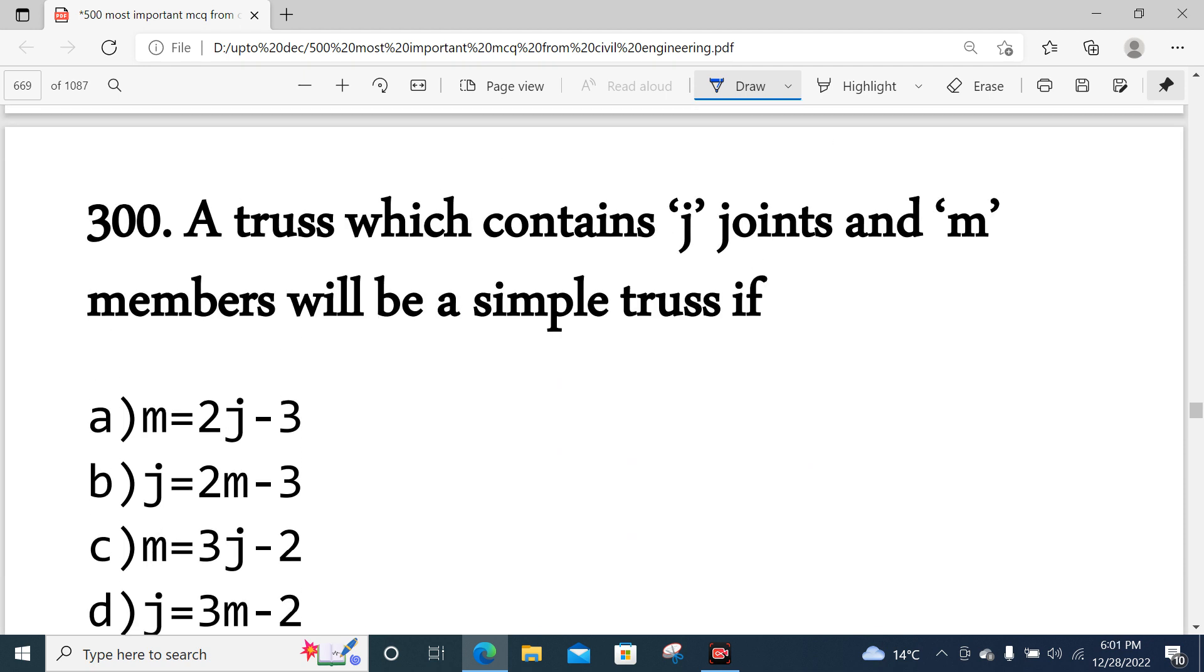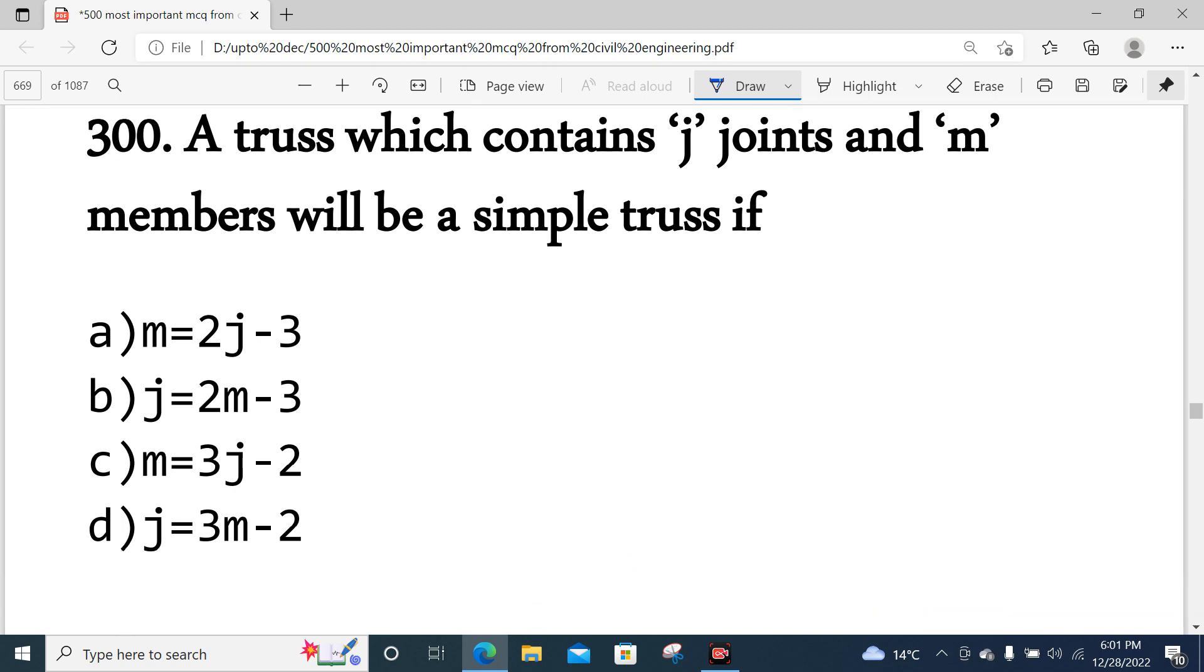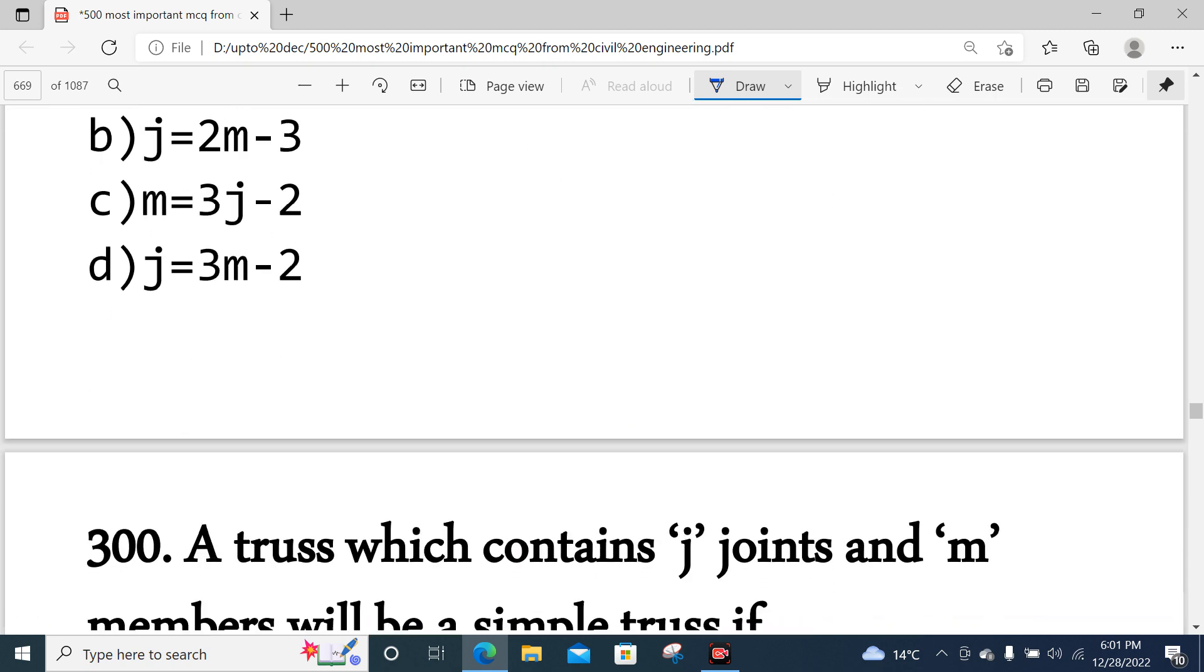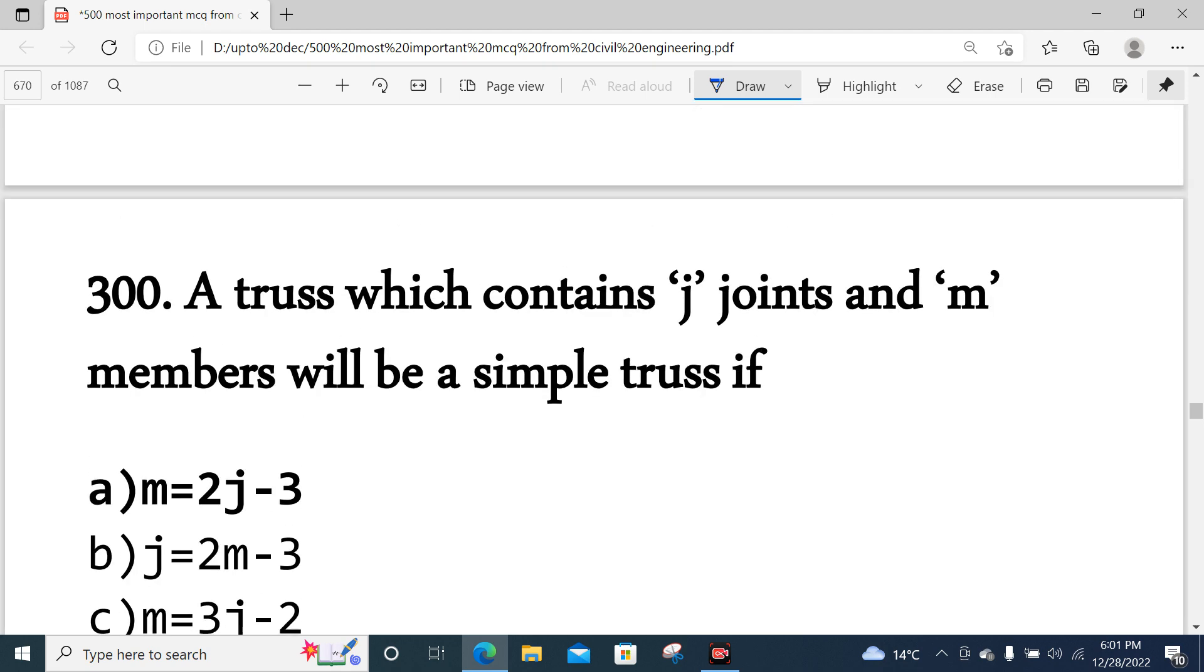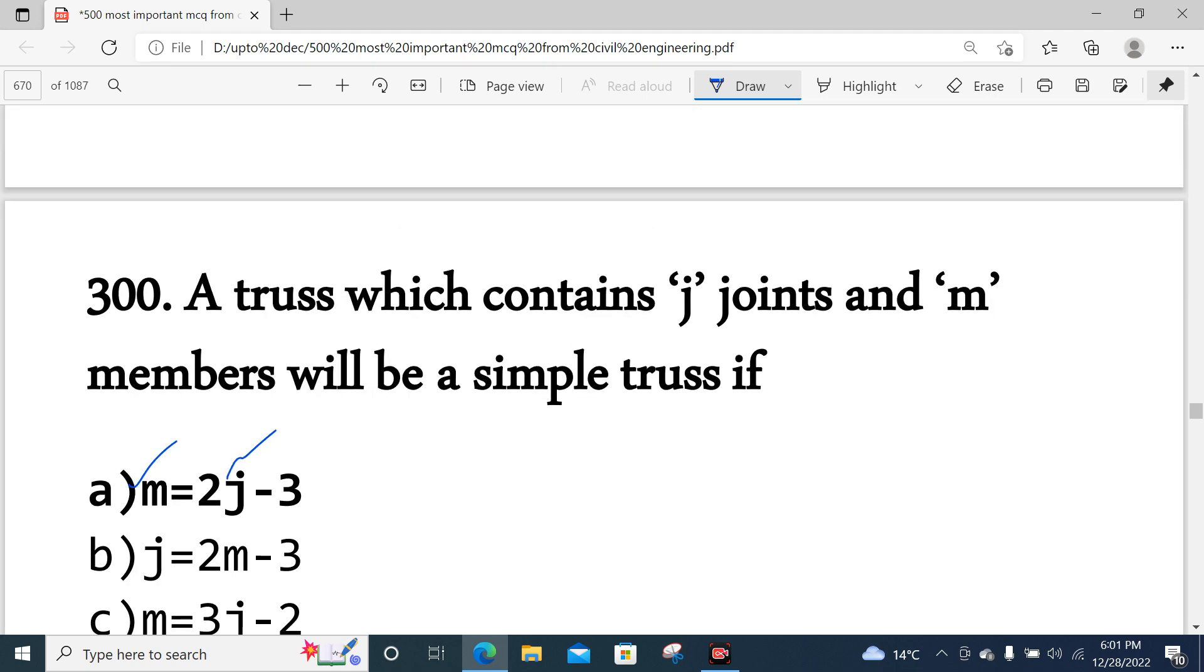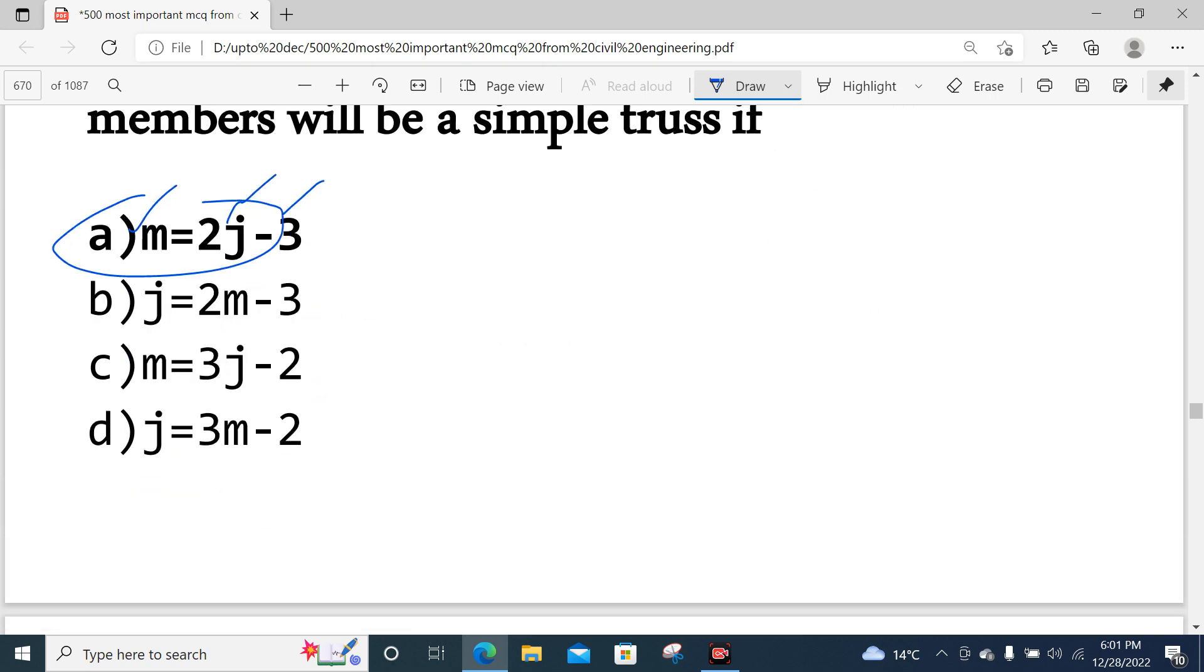Last question of this part: A truss which contains J joints and M members will be a simple truss if M = 2J - 3. M means members, J means joints. The correct answer is option number A.